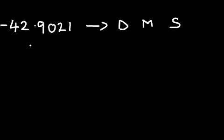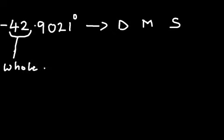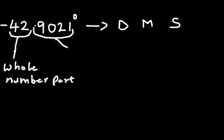Let's do this conversion. I want to let you know that this decimal number can be divided into two parts. We have the first part, which is 42 — the whole number part. And the second part, which is 0.9021 — the decimal part.